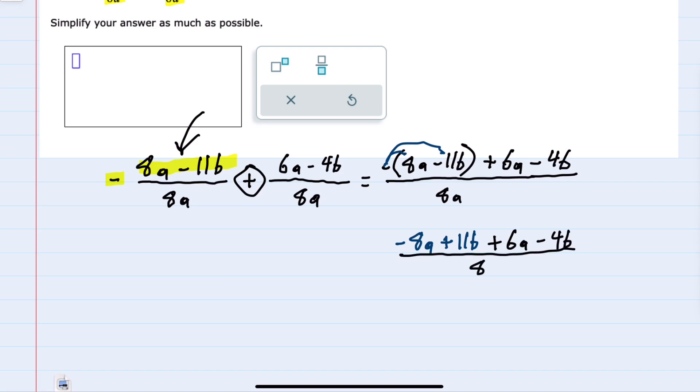including the denominator. I can now look at combining like terms. So in the numerator I have a minus 8a and a plus 6a. Those will combine to be a minus 2a. And then I also have like terms between the plus 11b and the minus 4b. Those can be combined to be a plus 7b.